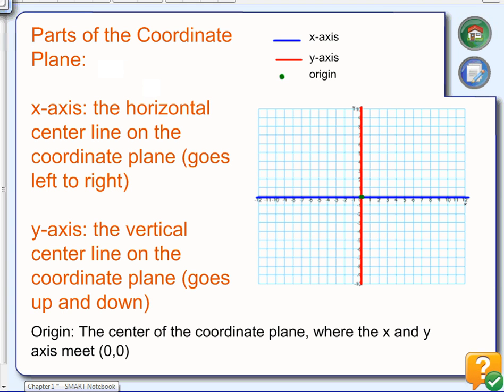Today we're going to be talking about the coordinate plane and two formulas that you can use in the coordinate plane. First, we're going to go over some parts of the coordinate plane and review them — this is nothing new but still important to touch on. The first thing we're going to look at is the x-axis, which is the horizontal line on the coordinate plane — it's the blue line in this picture.